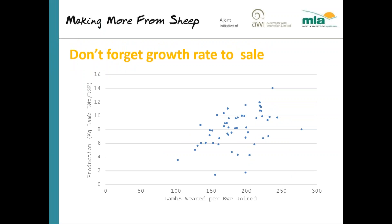Moving to growth rate to sale — the axis title should read 'growth rate to sale in grams per day' — we've got from 100 grams per day up to roughly 250 grams per day against production in kilograms of lamb dressed weight per DSE. Looking at that graph, as growth rate to sale goes up from 100 to 250 grams per day, there's a visible trend toward increased dressed weight per DSE — and it actually has a stronger trend in the dataset than lambs weaned per ewe joined.